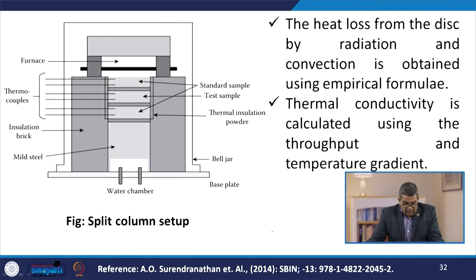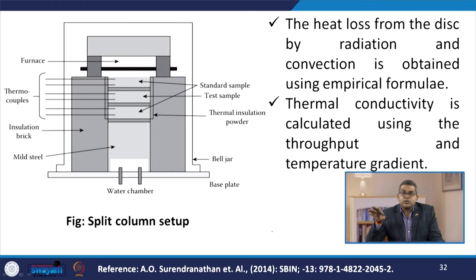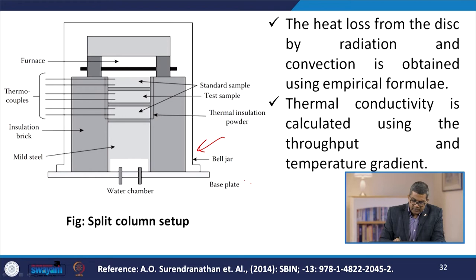The temperature of the hot plate and copper disc are measured using thermocouples. Draught screens are erected around the brick and the temperature of still air over the assembly is measured. Heat loss from the disc by radiation and convection is obtained using an empirical formula, and thermal conductivity is calculated from throughput and temperature gradient. The setup includes a bell jar, base plate, thermal insulation powder, standard test sample ports with thermocouples, and a furnace, all aligned with insulation brick under mild steel.